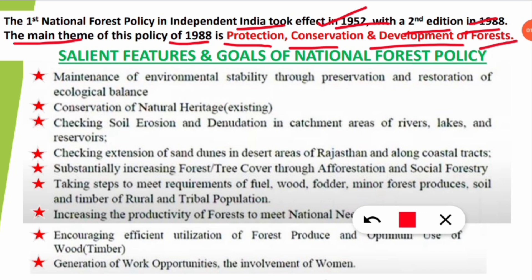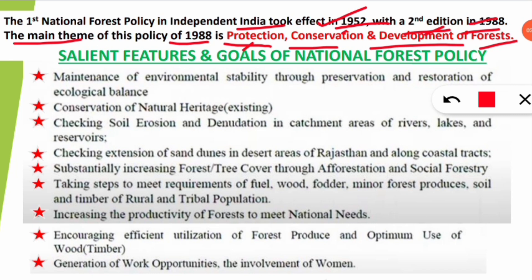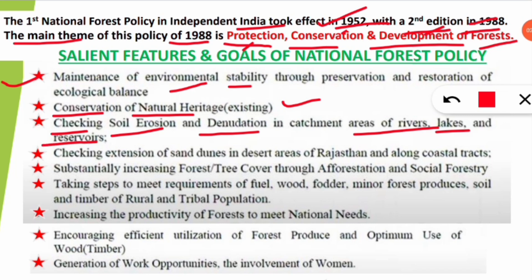Now we will know the salient features and goals of the National Forest Policy 1988 — both are important, write down all these things. First: to maintain environmental stability through preservation and restoration of ecological balance. Second: to conserve the natural heritage. Third: checking soil erosion and denudation in catchment areas of rivers, lakes, and reservoirs. Fourth: checking the extension of sand dunes in the desert areas of Rajasthan and along coastal tracts.